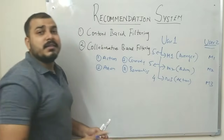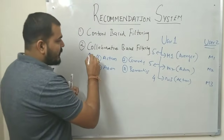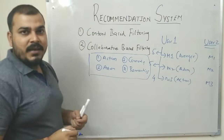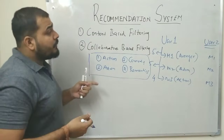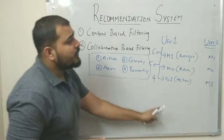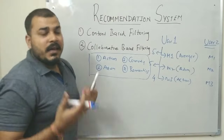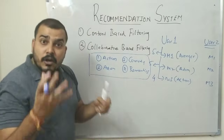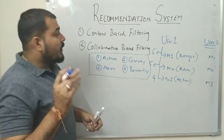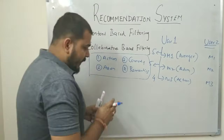Content-based filtering, in simple terms, tries to find the characteristics of a movie. In this case, the characteristics are genres like action, comedy, romance, and adventure. When multiple users watch movies of similar genres, they will all get recommendations for movies in those same categories.